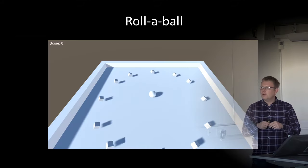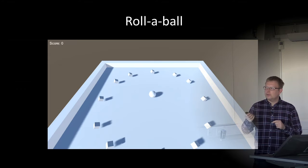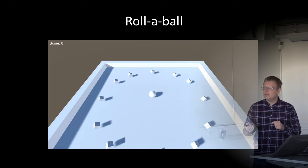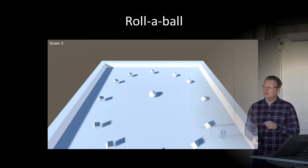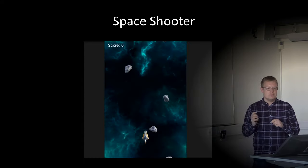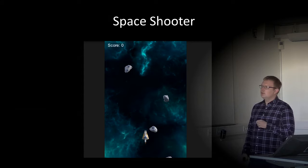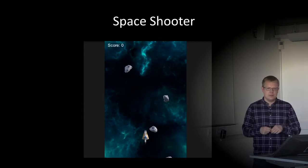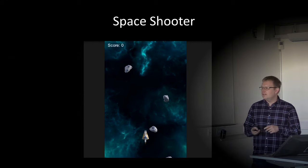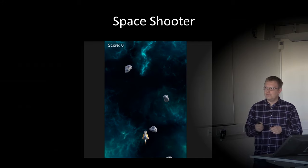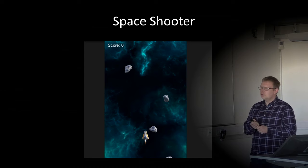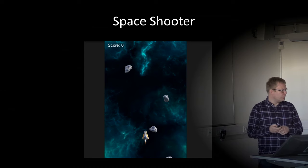The rollerball project looks like this: the player controls the ball in the center and the ball will roll around and pick up these animated pickup objects. The second is a top-down space shooter arcade style game where you control a spaceship and the task is to shoot down these asteroids before they destroy the player ship.